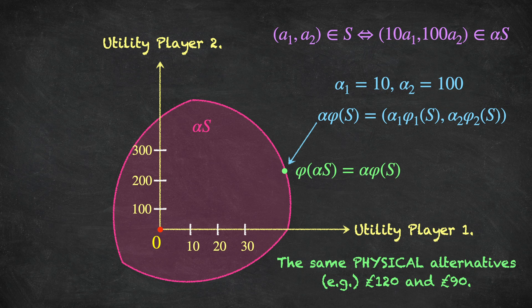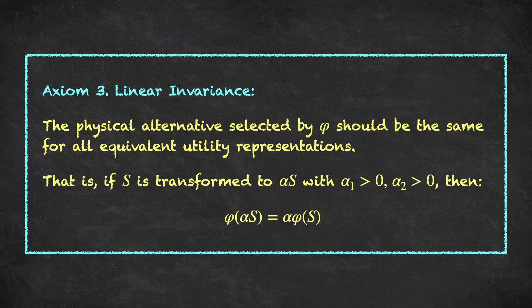That's the idea of linear invariance. The formal statement: Axiom 3, linear invariance, says the physical alternatives selected by our solution concept should be the same for all equivalent utility representations. That is, if the bargaining game S is transformed to alpha S — where alpha-1 and alpha-2 are both strictly positive — then the solution to the transformed problem, phi of alpha S, equals the transformed solution alpha times phi of S. Note that if we hadn't restricted disagreement utility to zero, we could have an axiom called affine invariance, handling positive affine transformations — both scale and location — capturing the same intuition.